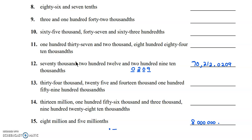Now on the decimal side: tenths, hundredths, thousandths, ten-thousandths, hundred-thousandths, millionths. We're going 6 positions over on our right-hand side, filling up all those positions and placing a 5 at the end. So we're going to have 5 zeros and a 5 at the end.